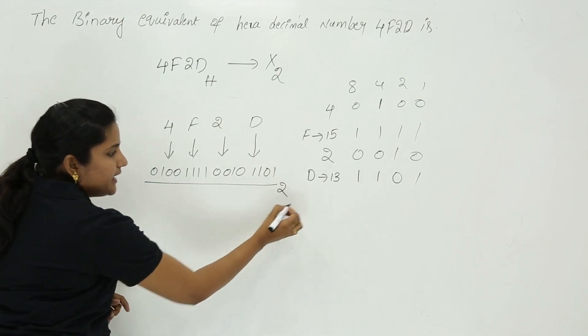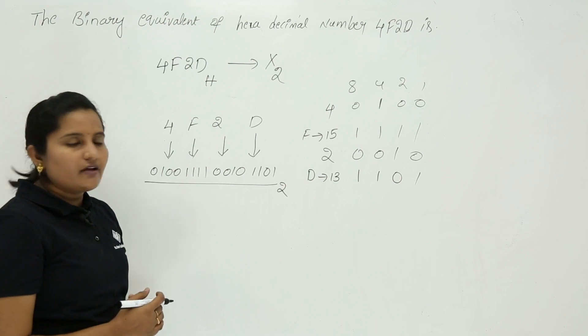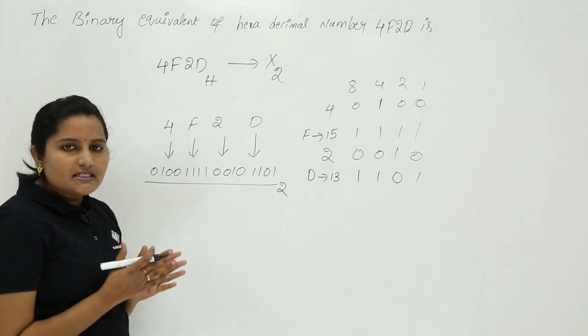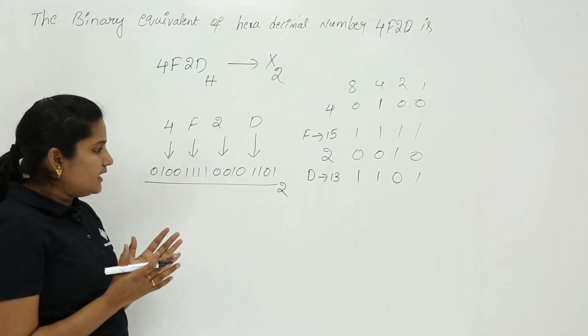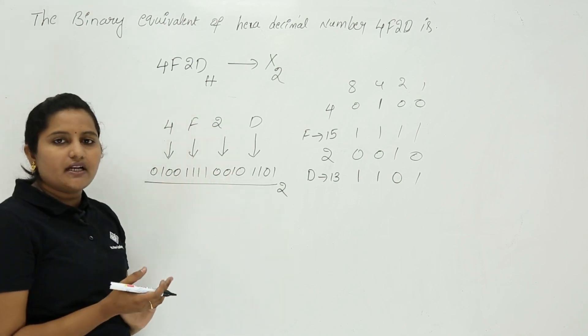This is the resultant binary number for the given hexadecimal number 4F2D. In the same way, we can find the binary equivalent for any hexadecimal number.